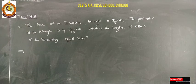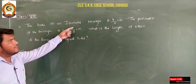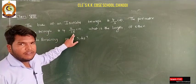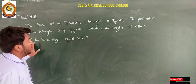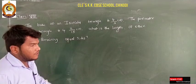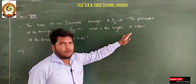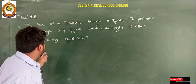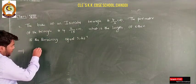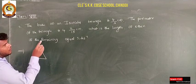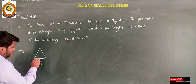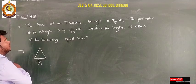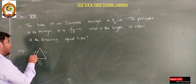Now, question number 3: The base of an isosceles triangle is 4/3 cm. The perimeter of the triangle is 4²/15 cm. What is the length of either of the remaining equal sides? I will draw a rough diagram. The base is 4/3 cm. We do not know the two equal sides, so let each equal side be x.